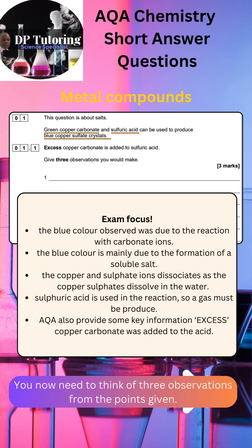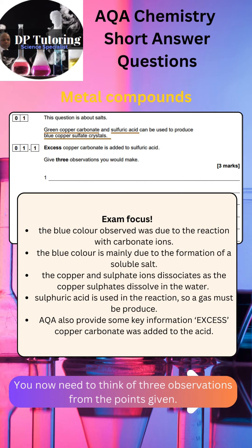To help you break down the question, please pay attention to the details on the screen. First, the blue color observed was due to the reaction with carbonate ions. Second, the blue color is mainly due to the formation of a soluble salt. Third, the copper and sulfate ions dissociate as the copper sulfate dissolves in the water. Fourth, sulfuric acid is used in the reaction, so a gas must be produced. Fifth, AQA also provides key information: excess copper carbonate was added to the acid. You now need to think of three observations you can make from these points.